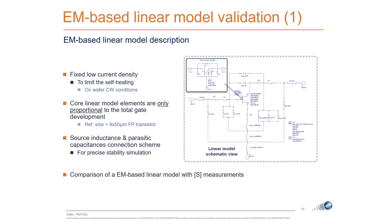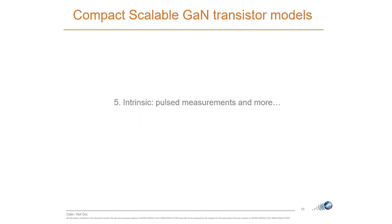For the EM-based linear model, we start with low current density to limit self-heating. The core linear elements are assumed — and validated afterward by comparison — to be directly proportional to Wu and N, the number of gates. Source inductance and parasitic capacitances are then deduced from the EM simulations. Comparing EM simulation with S-parameter measurements for various topologies allows further refinement of model quality.